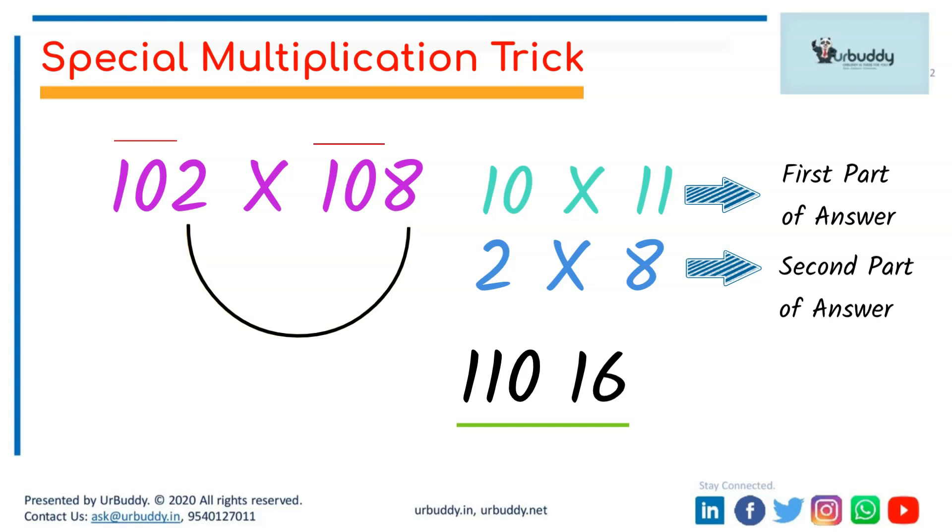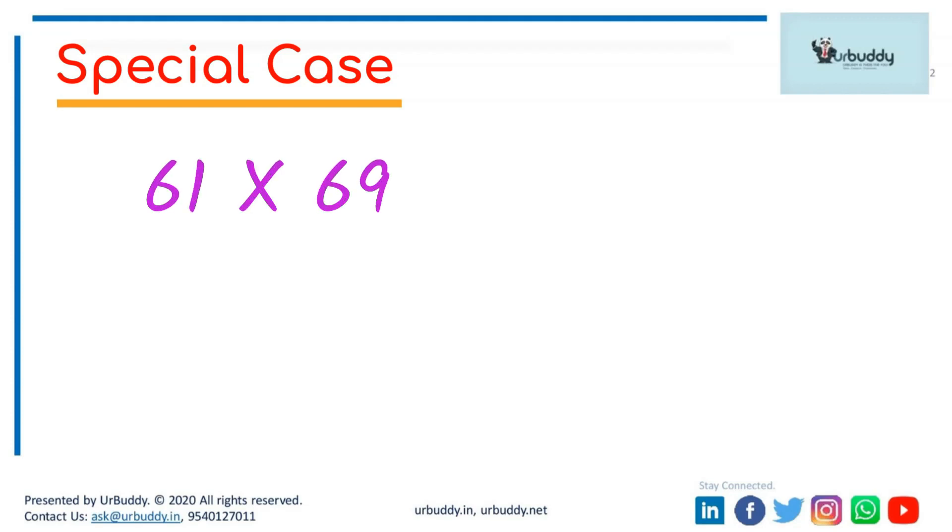But there is a caution, there is a special case involved. Suppose we have to multiply 61 by 69. Now you can easily observe that 6 is the same in both the numbers, and 1 and 9 add up to 10.